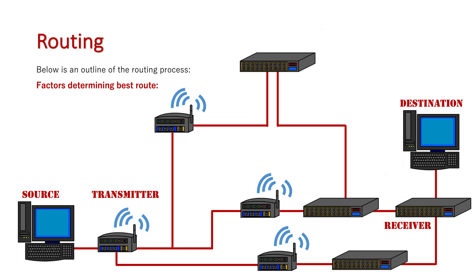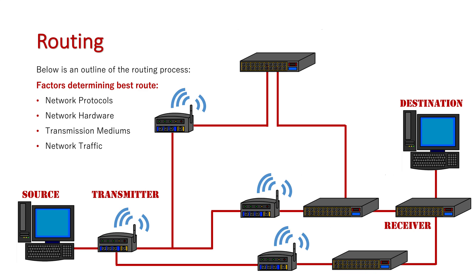Factors that might determine the best route include the actual network protocol being used — does it cross into any networks where it might need a gateway device, or does it have to stick to specific pathways? The network hardware being used also matters: wireless routers can send a wireless signal and need to be received by another wireless router, which is then hardwired to a switch. So that all impacts the pathway the message can take.